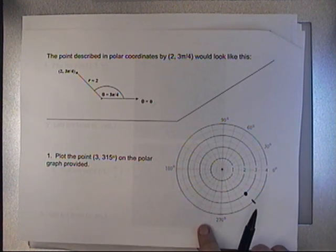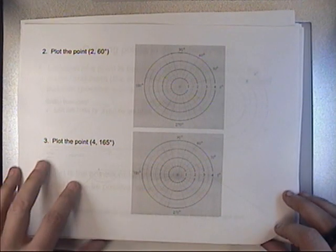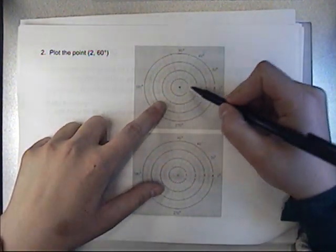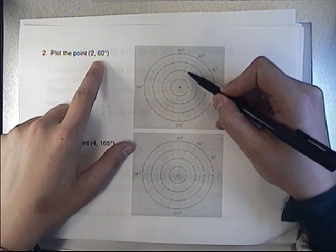Not this one. If I wanted something that was 2 units away from the origin, here's the origin, 1, 2, at a 60 degree position, that would be right there.